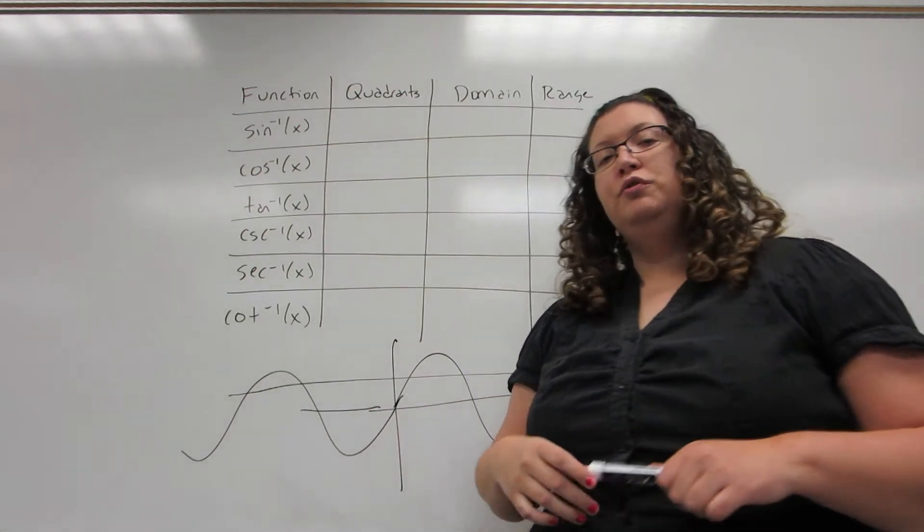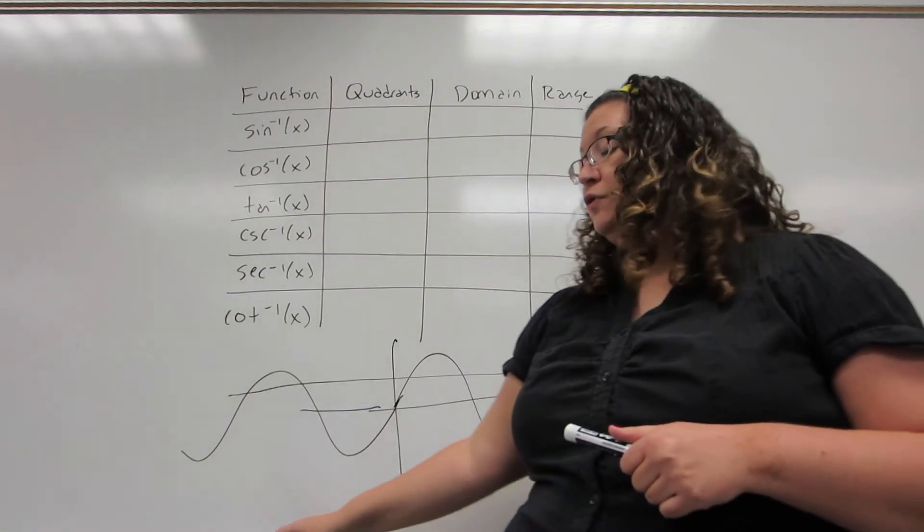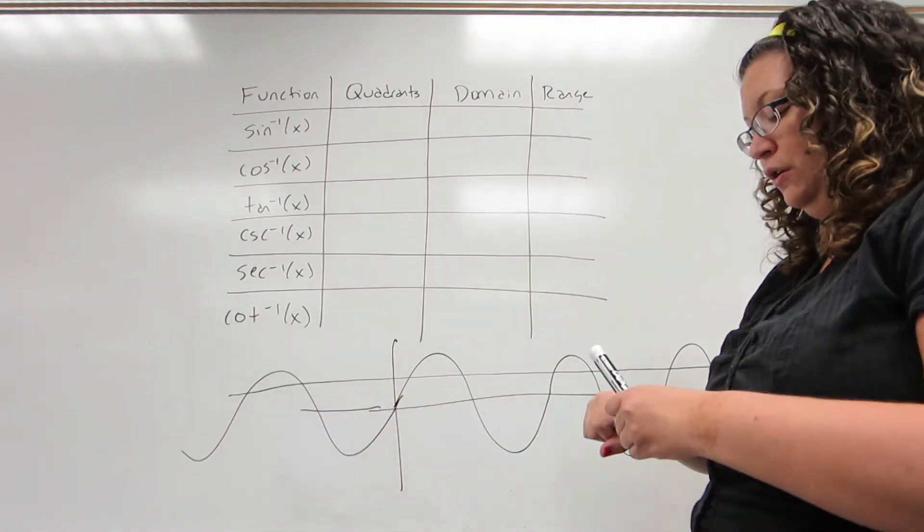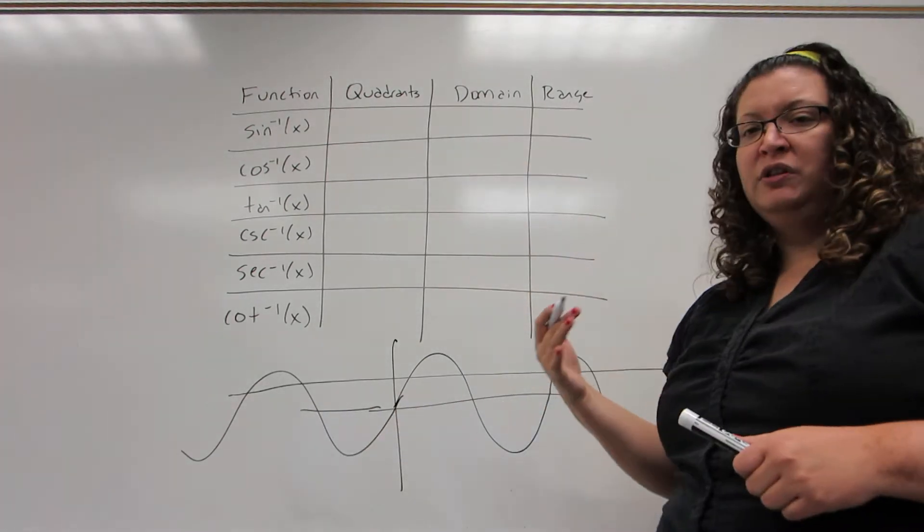So what we're going to do is we're going to modify the domain so that it will pass a horizontal line test. Now, each of the six trigonometric functions is done differently.